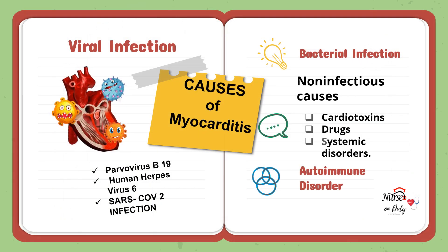The most common infection na nagko-cause ng myocarditis is the viral infection. Pag sinabi natin na viral infection, virus ang causative agent niya. Nagko-cause siya ng proliferation at nag-leads to harmful effect in our system. Virus cannot reproduce without the assistance of a host — yung katawan ng tao ang ginagawa niyang host. Then nag-i-introduce siya ng genetic material niya into the cells para magkaroon siya ng maraming productions ng virus. Pag maraming virus inside sa katawan ng tao, doon na tayo nagkakaroon ng signs and symptoms.